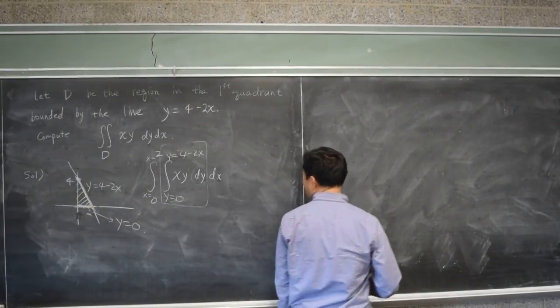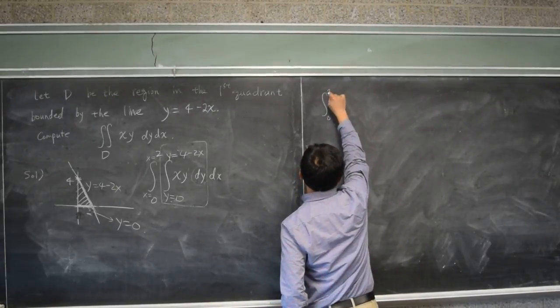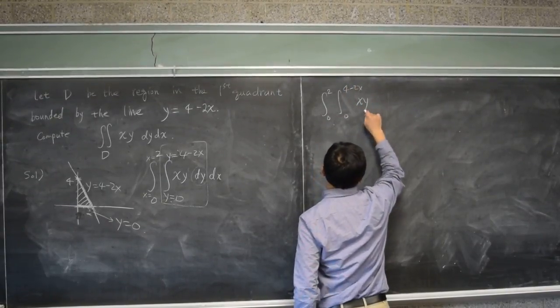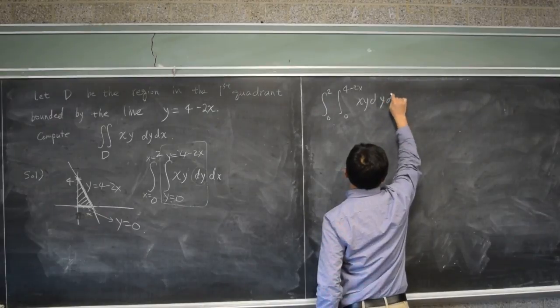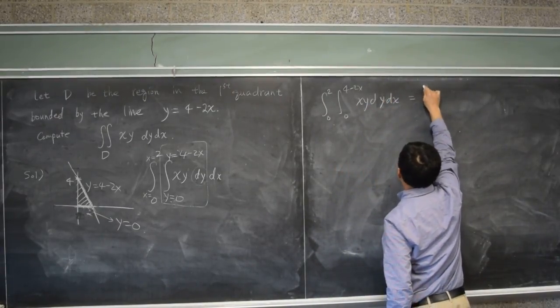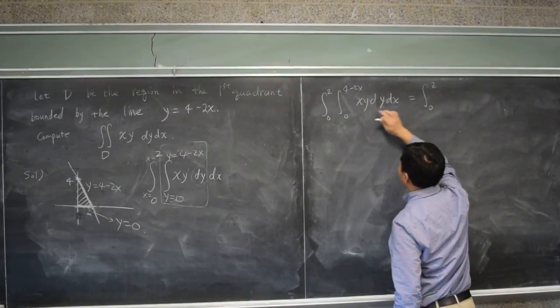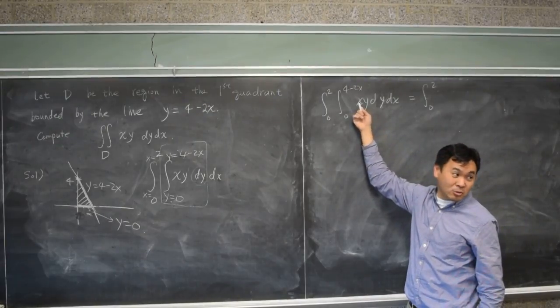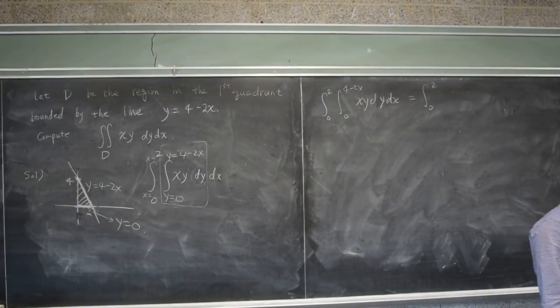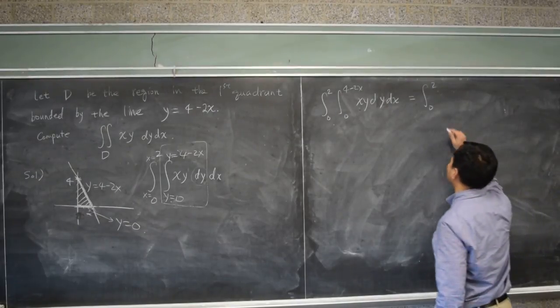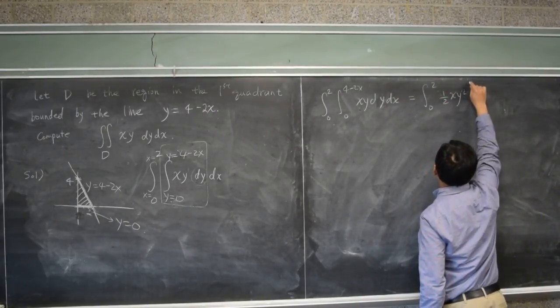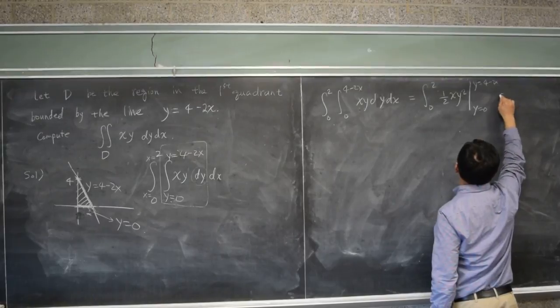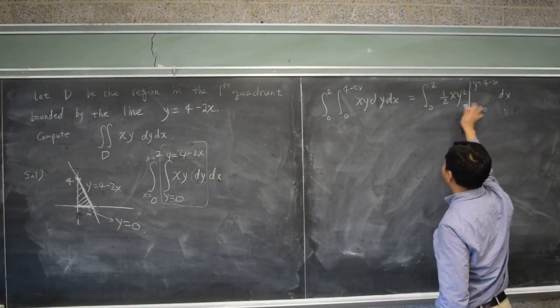So let's now do the computation. The computation part is easy. It's not that hard. So let's see. 0 to 4 minus 2x, xy dx. So first you have to integrate this, right? xy integrated by y is? X is just a constant, so you don't care. You're only integrating by y. So it's y squared over 2. So it's one half xy squared. And these are values of y, right?